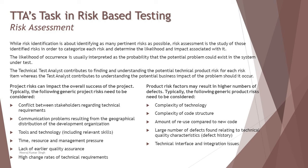On the other side, product risk is completely related to the product you are building. Product risk examples from a Technical Test Analyst perspective include: complexity of the technology, complexity of the code structure, amount of reuse compared to new code, a large number of defects found relating to technical quality characteristics, and technical interface and integration issues. These are the kinds of things most important for a Technical Test Analyst to consider while assessing a particular risk.